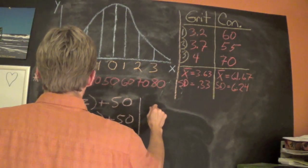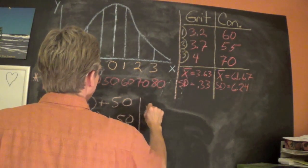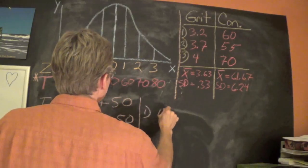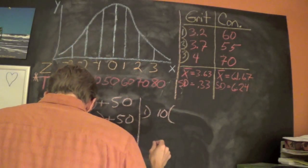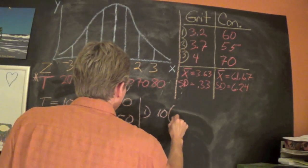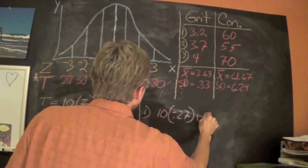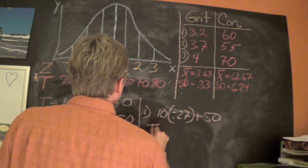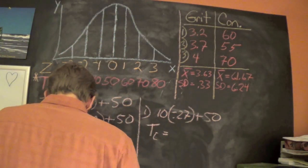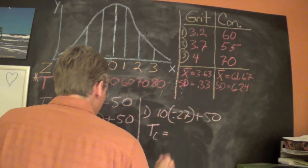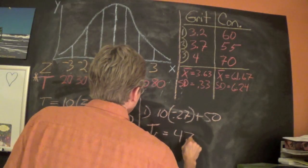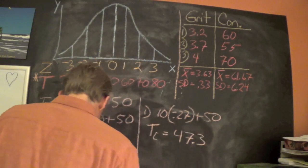So then if we were to do the same thing for student one on conscientiousness, we're going to say 10 times the Z-score which was negative 0.27 plus 50. So the T for conscientiousness came up to 47.3.